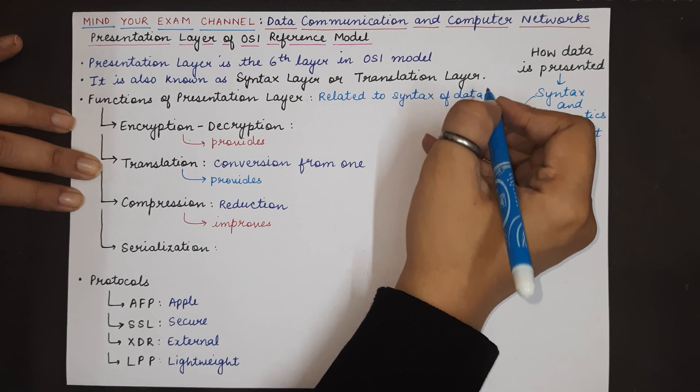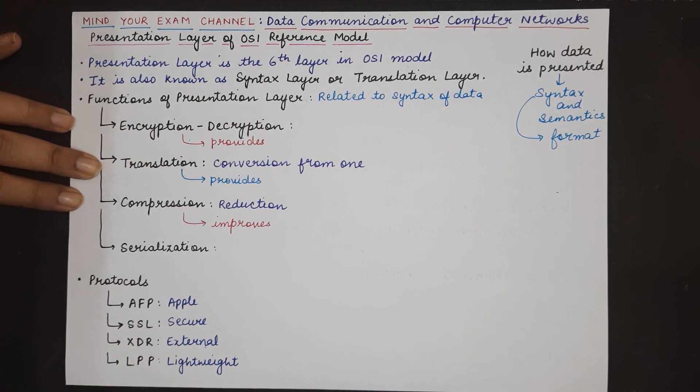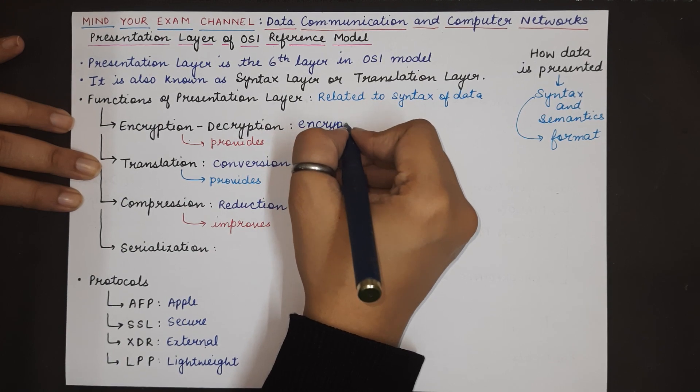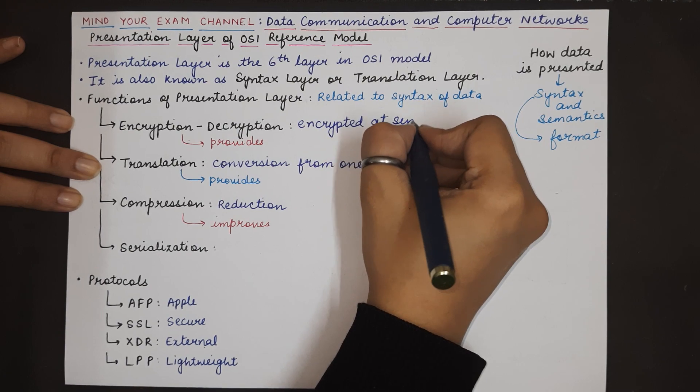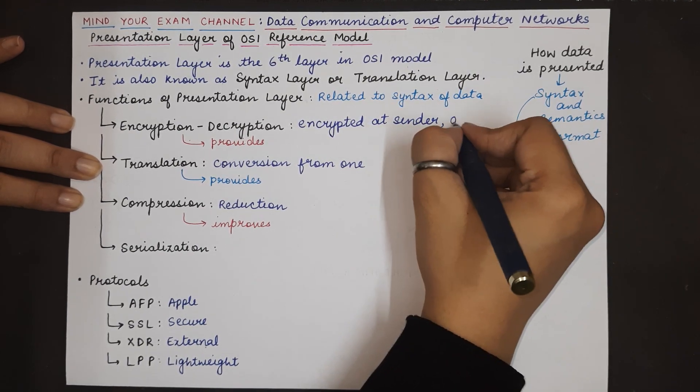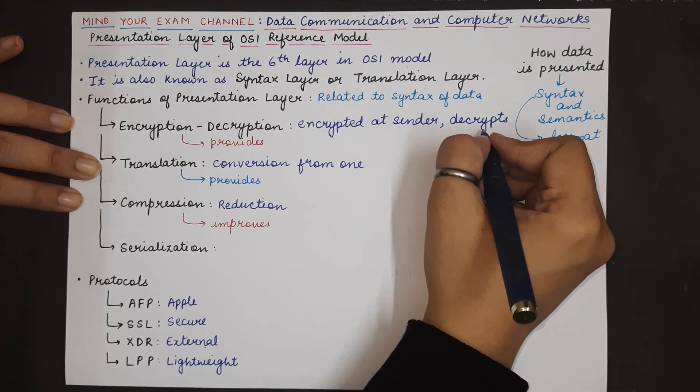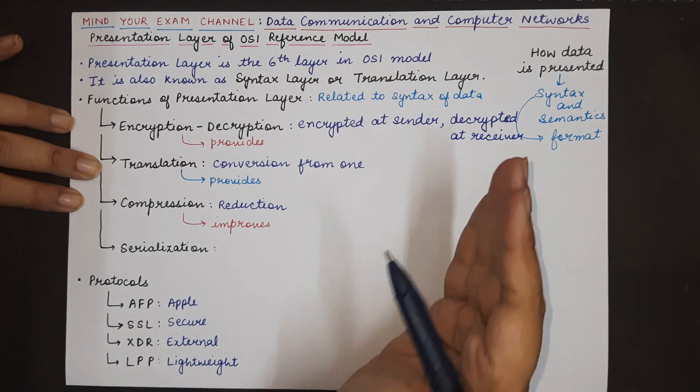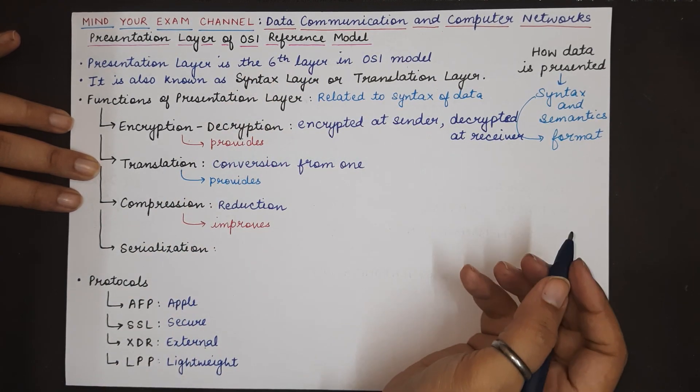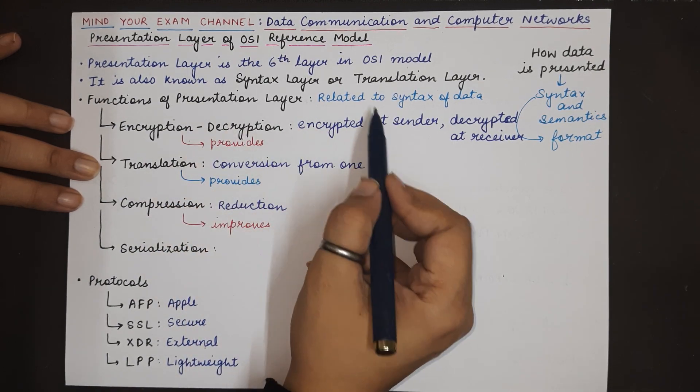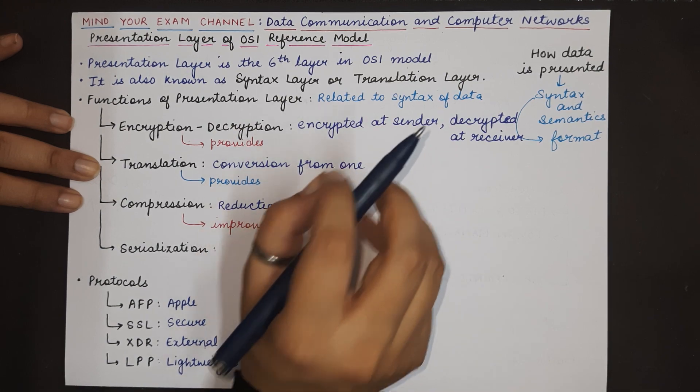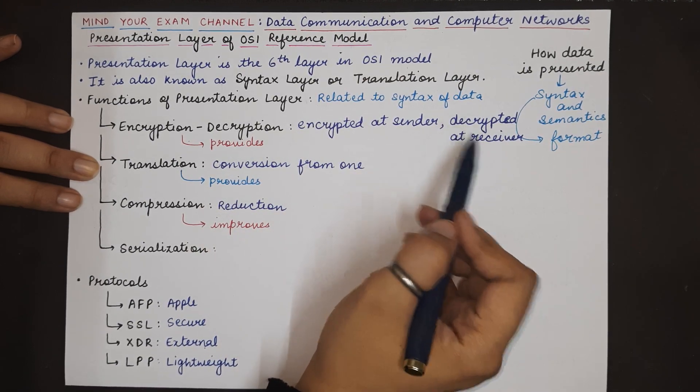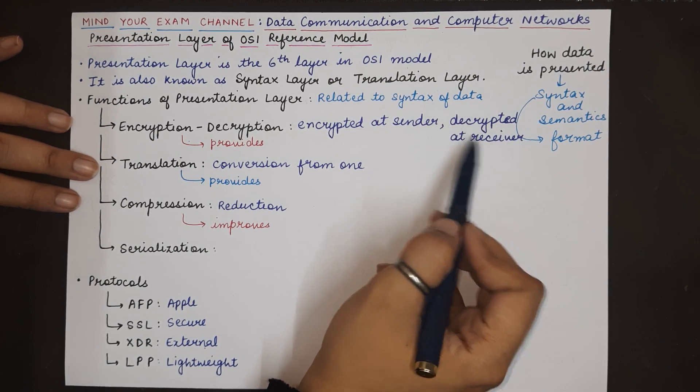The first and the most important function of the presentation layer is encryption and decryption. Encryption is performed at the sender end. The data is encrypted at the side of the sender and the presentation layer at the receiver decrypts the data at the receiver. That means that when the sender creates some data that has to be transmitted from the sender's application to the receiver's corresponding application, then the presentation layer encrypts that data which means it converts it into a form that is not understandable by anyone in between.